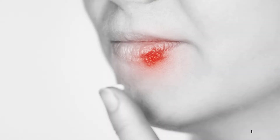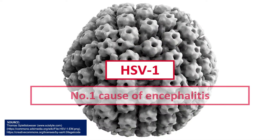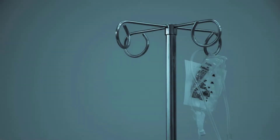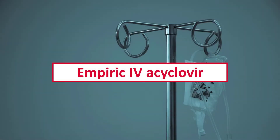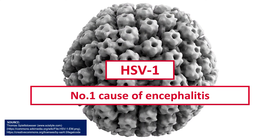Hello everyone. Herpes simplex, the same virus that causes cold sores, is the most common cause of sporadic encephalitis worldwide. It's so common that whenever we see a patient with possible encephalitis and we don't know the cause, which we usually don't right away, we start empiric therapy for herpes simplex because early treatment is paramount. And if there is one good thing about this virus, it's that it's one of the few causes of viral encephalitis that is actually treatable.